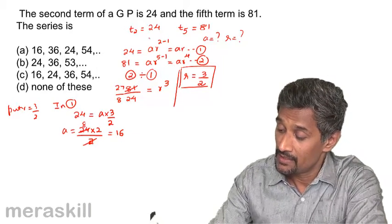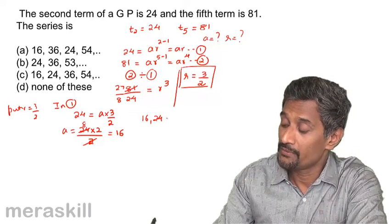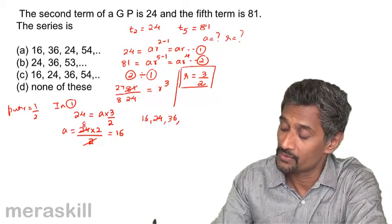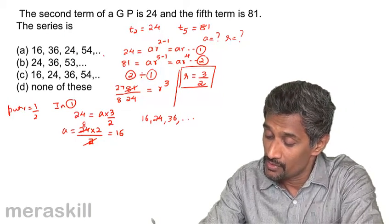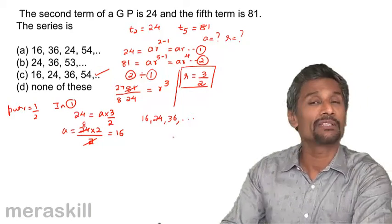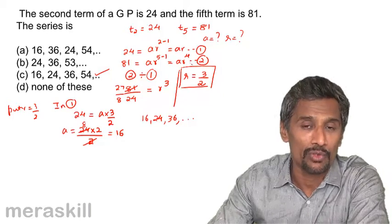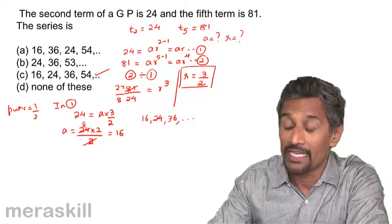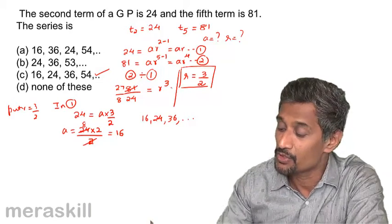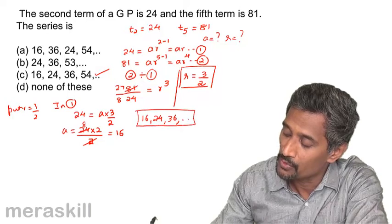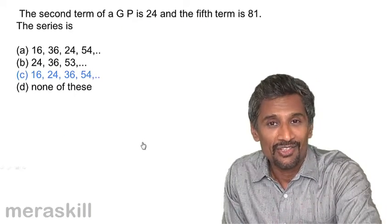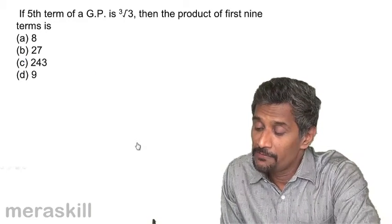The first term is 16. The series is: 16, 24, 36, 54, and so on. We are basically solving the first and second equations — just as in arithmetic progression we subtracted to find d, here we divide to find r and substitute to find a. So our series is 16, 24, 36, 54, and so forth.